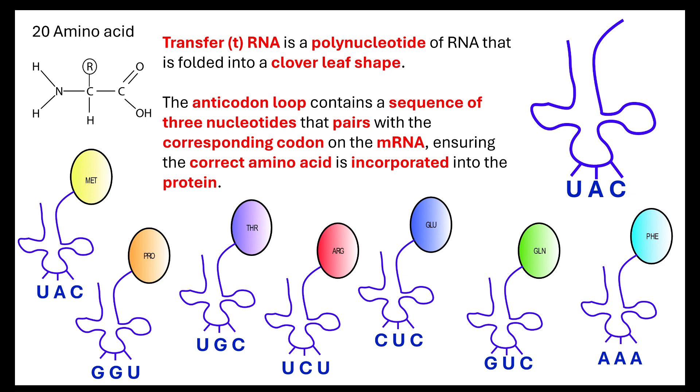So, those anticodons, if you think we have four bases, adenine, guanine, cytosine and uracil, because there are four bases, that therefore means that we have 64 potential combinations of the triplet anticodons.